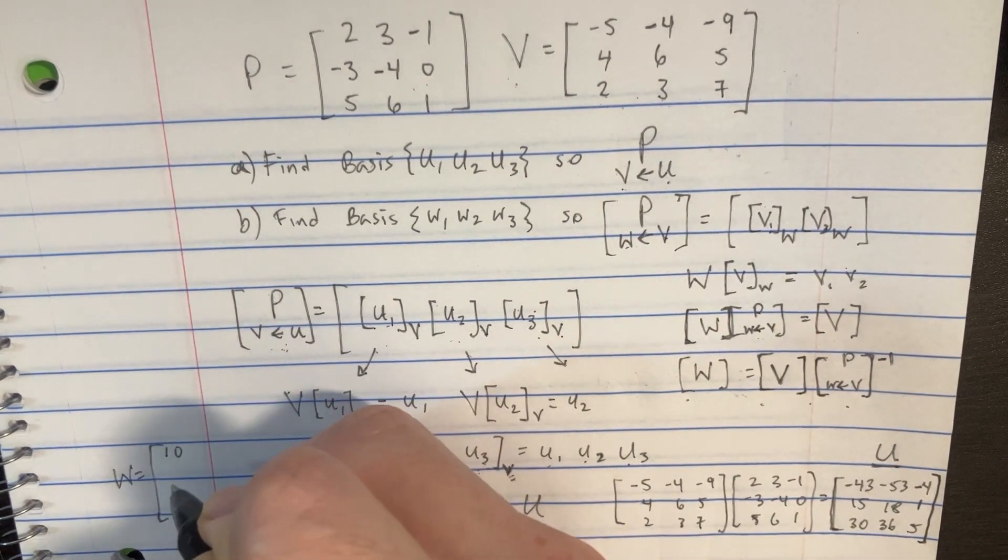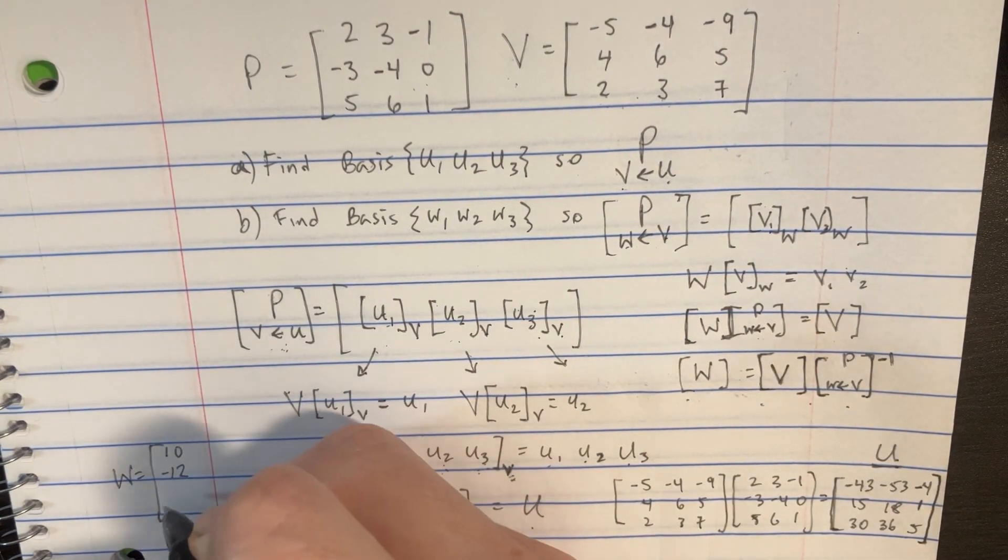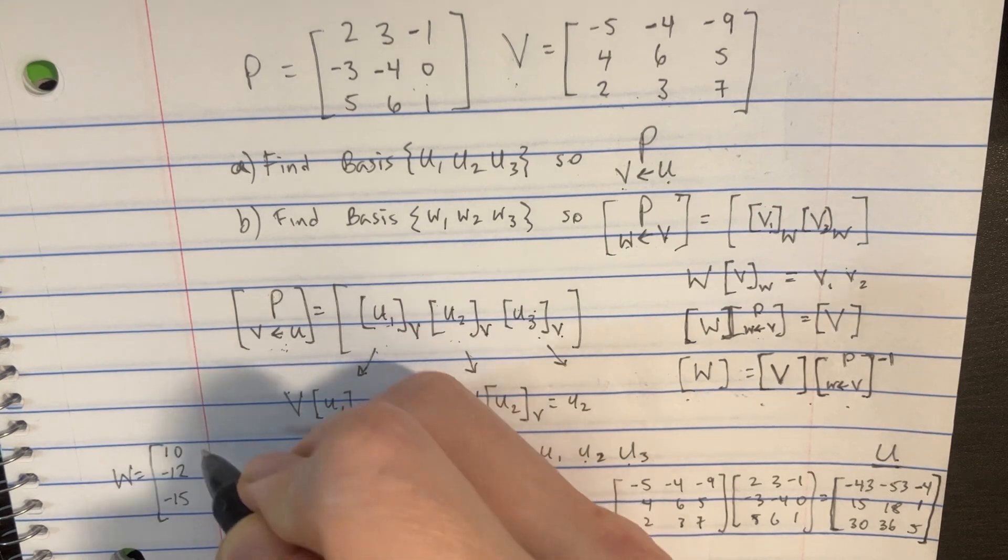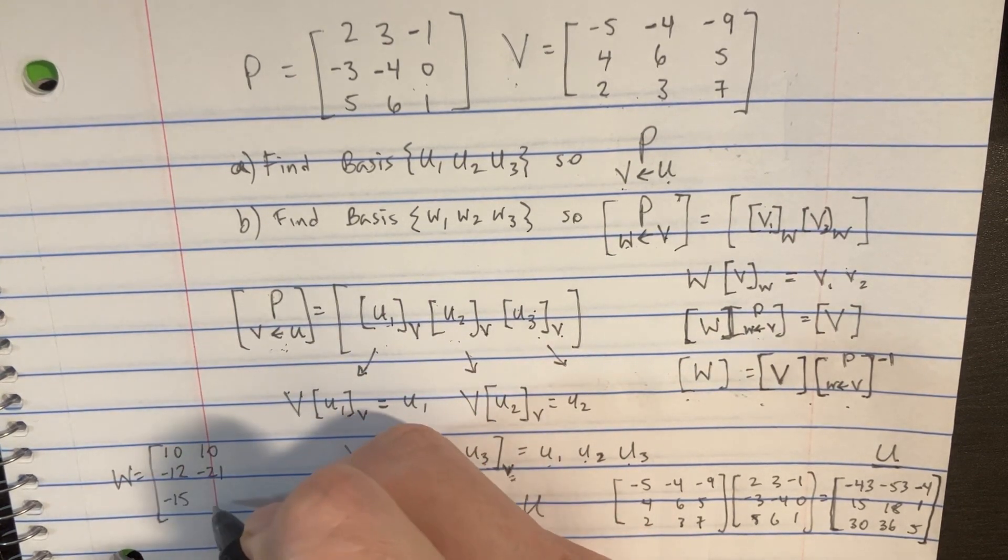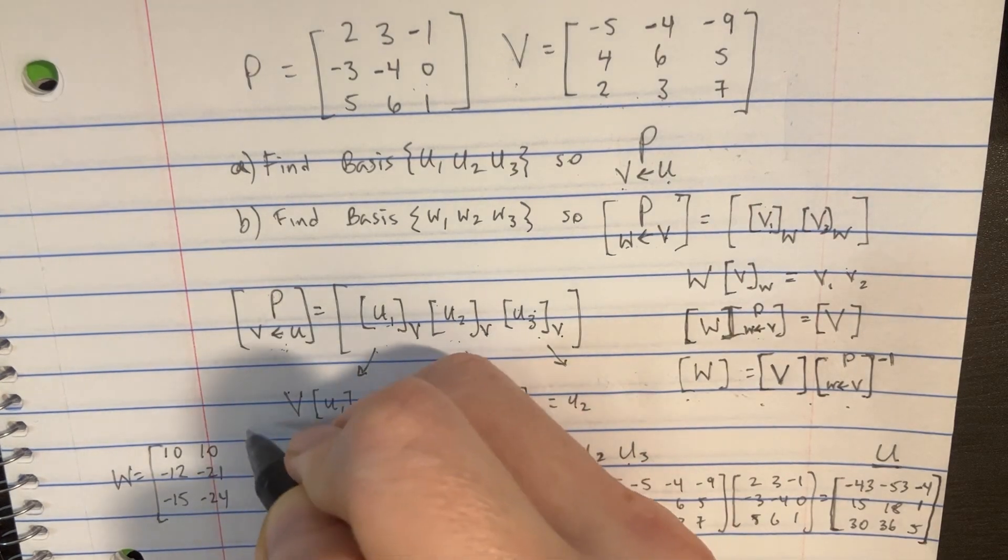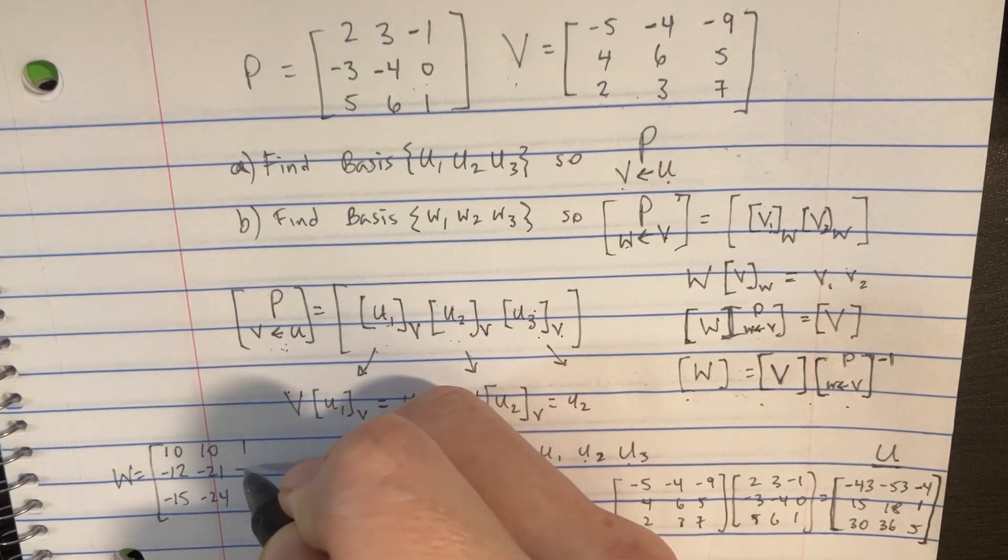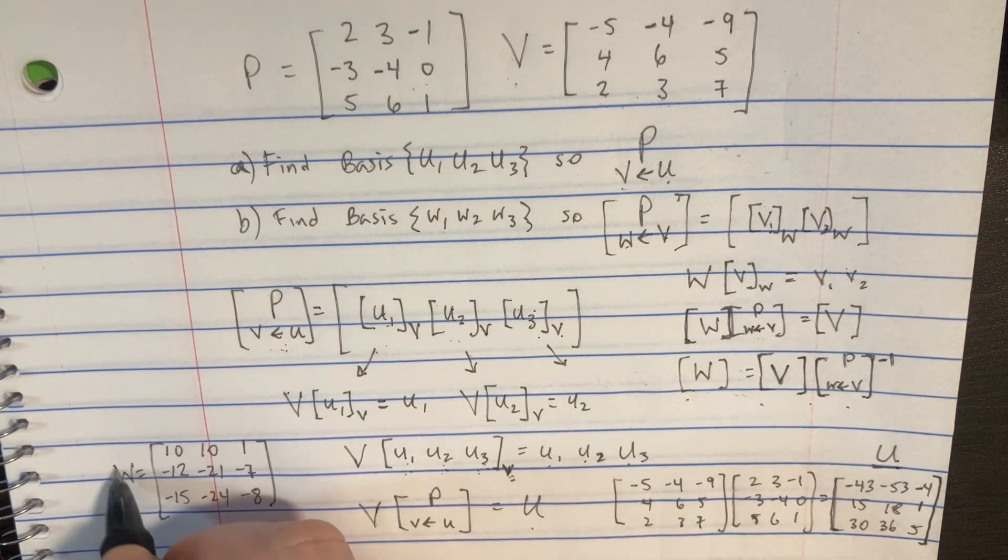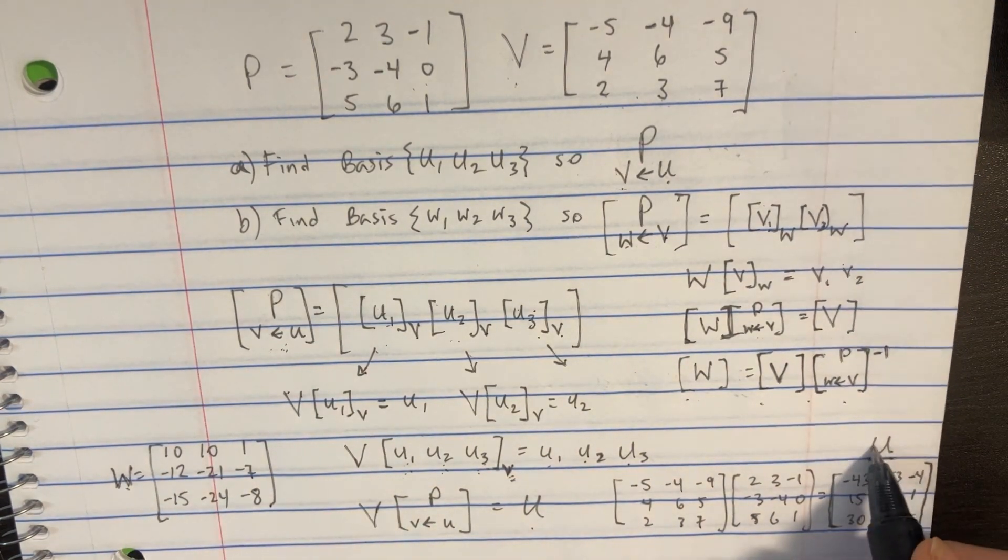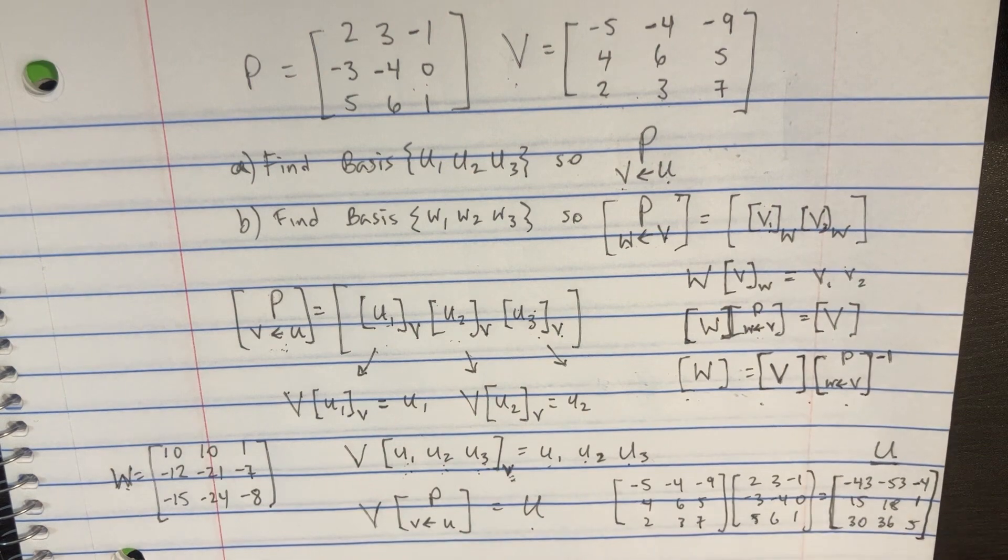And that's just going to be equal to 10, negative 12, negative 15. Then we'd have a 10, negative 21, negative 24, and a 1, that's negative 7, and a negative 8. And so now we have the answers for the W here and the U here. You can see the two different ways we found it.